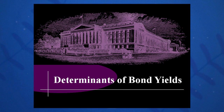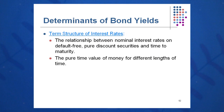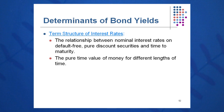What determines the yield on a bond? Essentially the Fischer effect, and it is reflected in the term structure. Within the bond yield, there is a real return, an inflationary return, and that little RH component — the interest rate risk component. So there are three different components in this term structure.